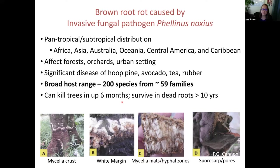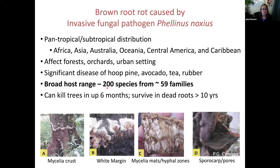Phellinus noxius causes significant disease on hoop pine, avocado, tea, and rubber — it's economically very important but also ecologically important because it has a very broad host range, impacting about 200 different species from 59 different families. Mortality can happen fairly quickly: it can kill trees within up to six months, and then survive in dead root materials as a saproph yte for over 10 years. It can be really damaging on sites where it's found.